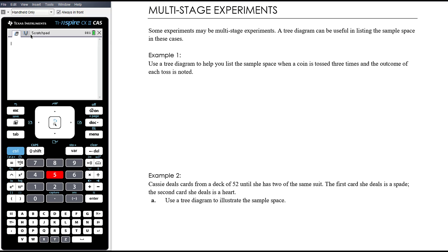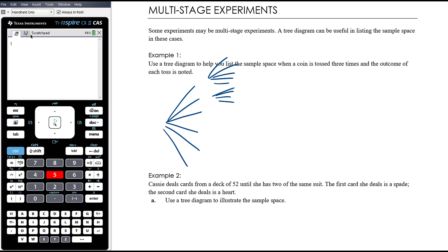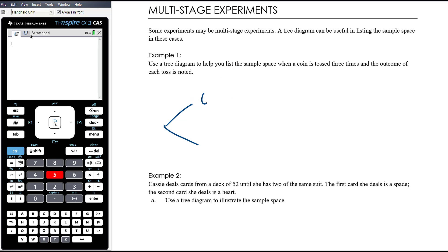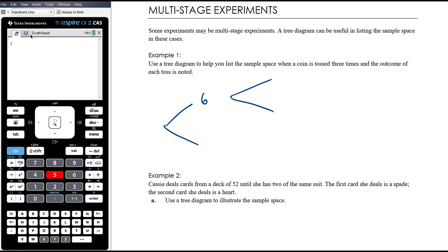You don't always need every branch. If you're rolling a fair die twice, you don't need to list one through six for each roll. If you're only interested in rolling sixes, your tree diagram becomes just 'six' or 'not six', so you don't have so many branches. Thinking about how you set up the tree diagram is important.